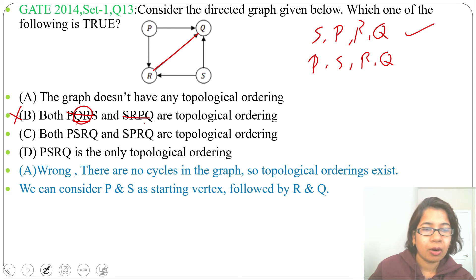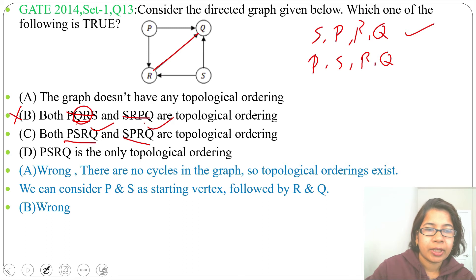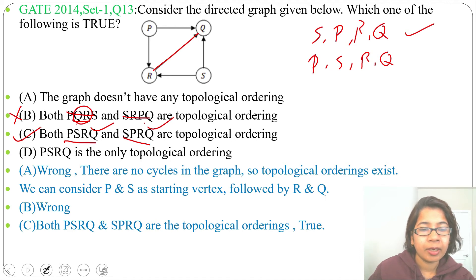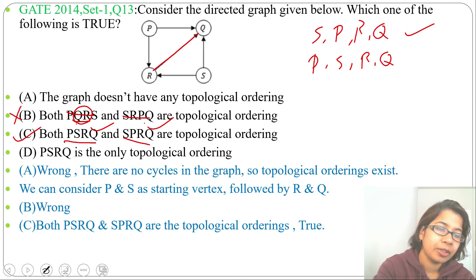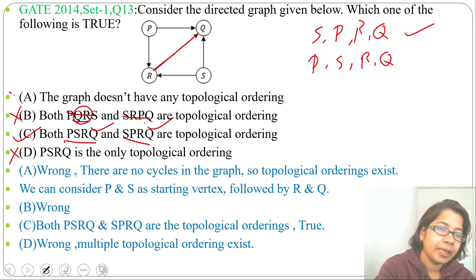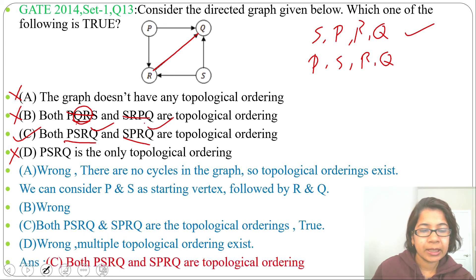Option C: PSRQ and SPRQ are both topological orderings — yes, correct! Option D: PSRQ is the only topological ordering — no, this is wrong, there are two topological orderings found by the DFS-based algorithm. So option A is wrong, option B is wrong, option D is wrong. Only option C is correct.